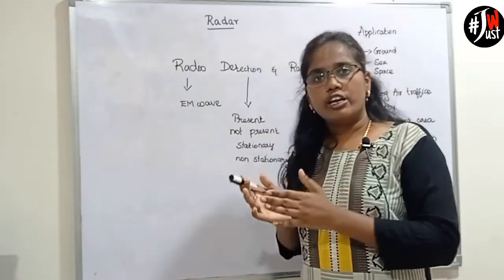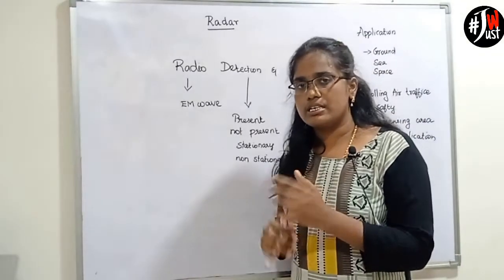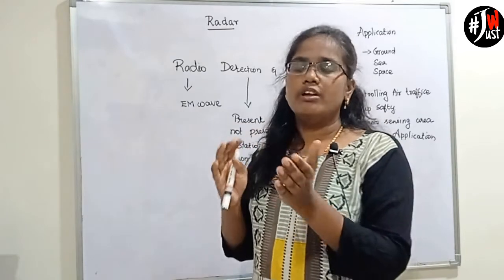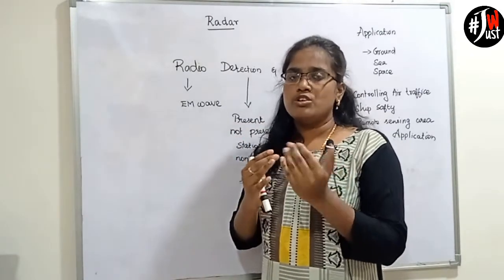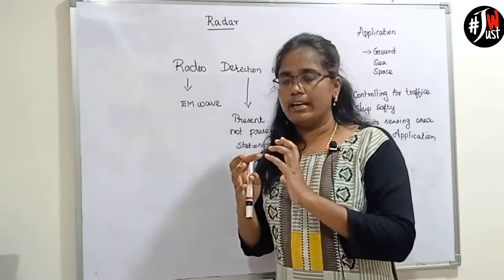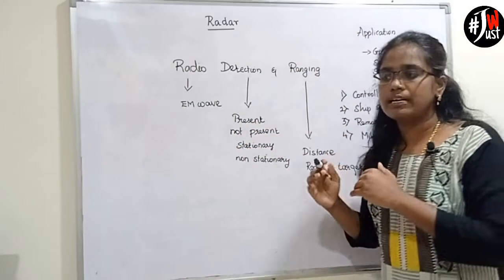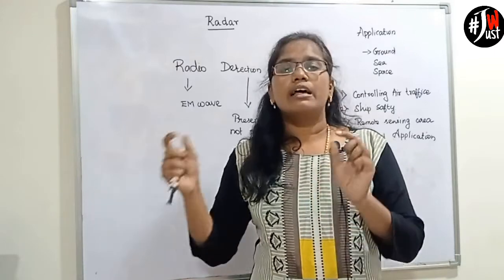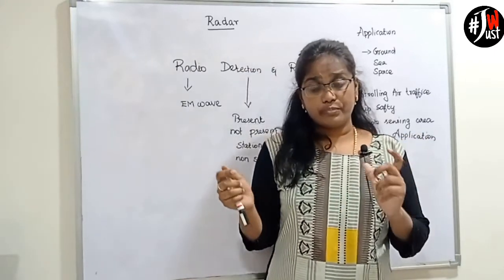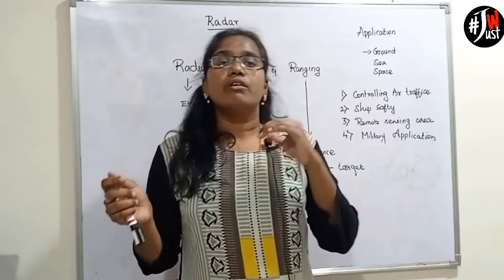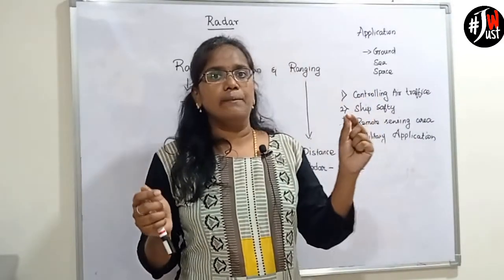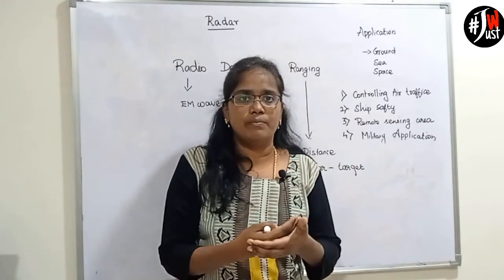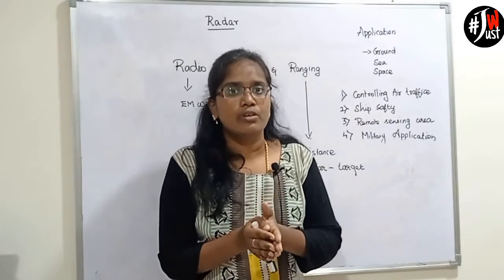The target may be stationary or non-stationary. Stationary means the target is not movable; non-stationary means a movable target. We can detect the target by using radar. And what is ranging? Ranging means it is the distance between our radar device and the target. This is called radio detection and ranging. By using this radar, we radiate an electromagnetic signal and we study the reflected back signal — or else the echo signal — by using the radar.